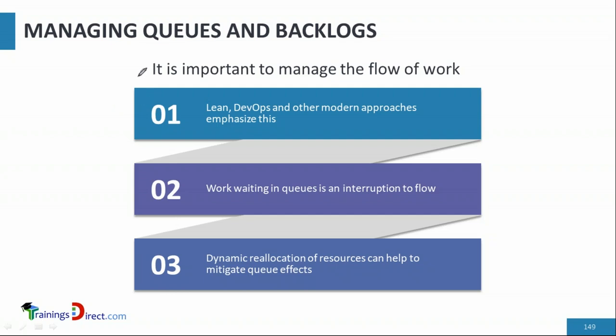In any operation, service, or project, it is important to manage the flow of work. A queue happens when demand is more than supply. For example, at a railway station buying a ticket, if there were infinite counters for every new person, there would be no queue. But that's impossible, so queues build up due to resource shortage.